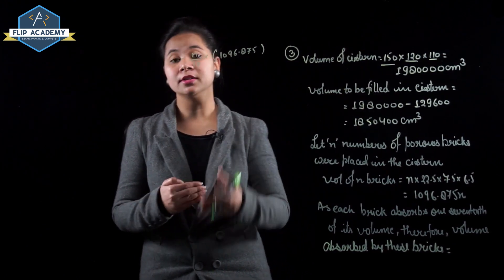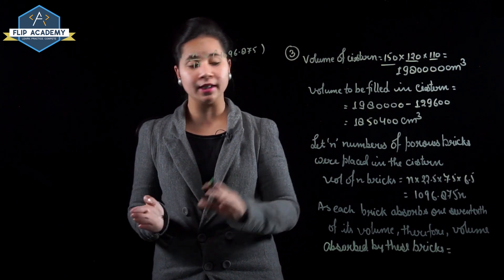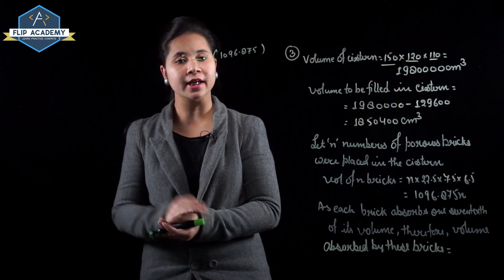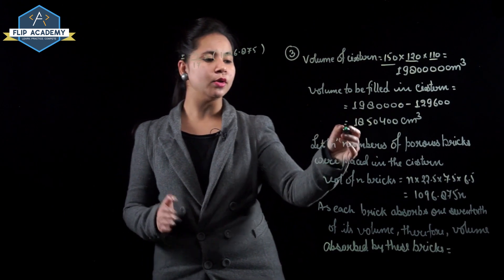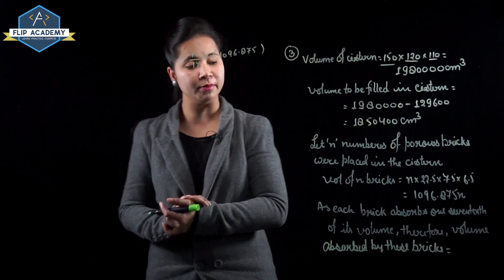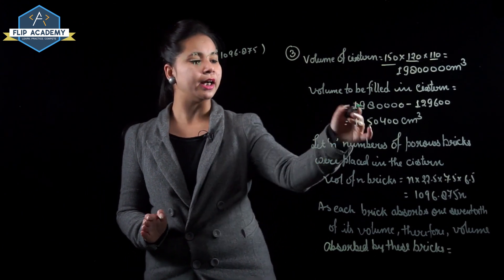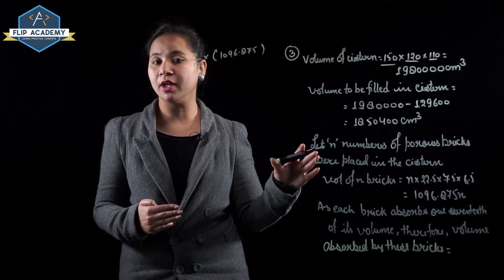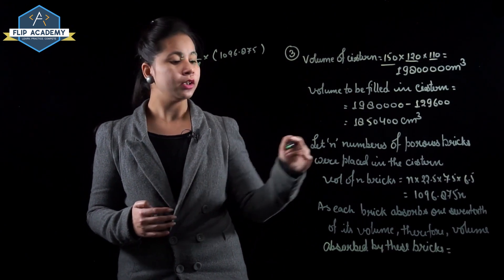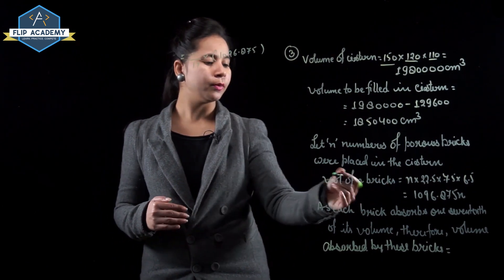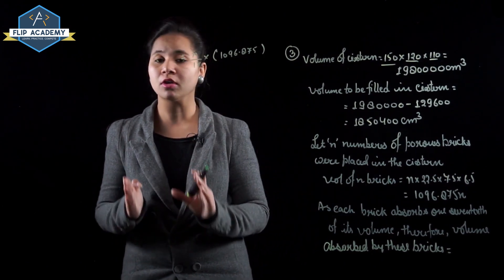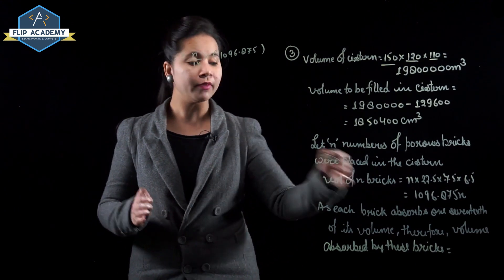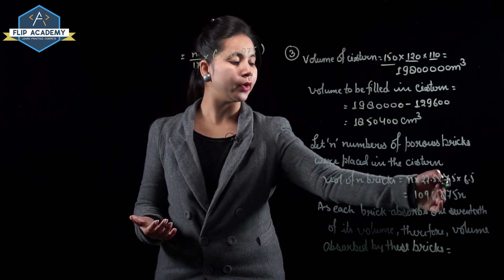Volume to be filled in cistern = 19,80,000 − 1,29,600 = 18,50,400 cm³. Each brick absorbs 1/17th of its own volume. Volume of n bricks = 22.5 × 7.5 × 6.5 × n = 1096.875n cm³.